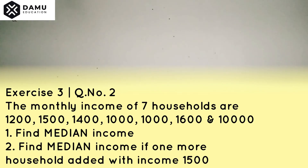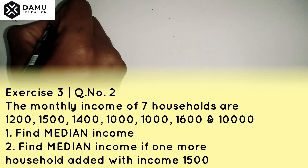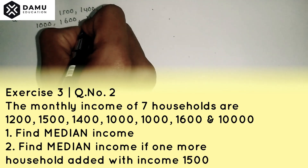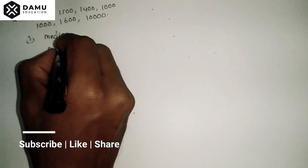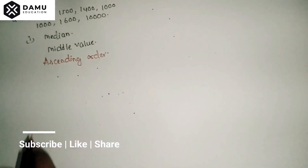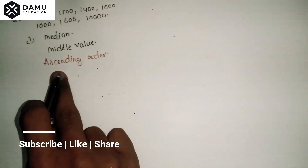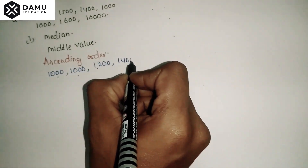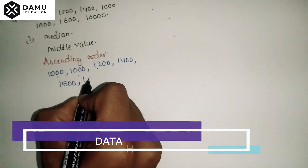The next question gives seven household monthly incomes: 1200, 1500, 1400, 1000, 1000, 1600, and 10000. They ask us to find the median income. Median means the middle value. First, we write the values in ascending order from lowest to highest: 1000, 1000, 1200, 1400, 1500, 1600, 10000.